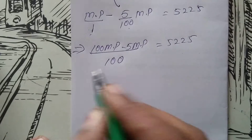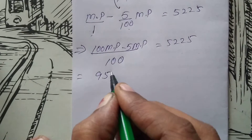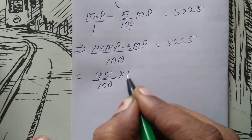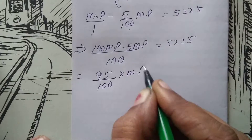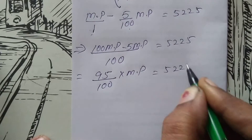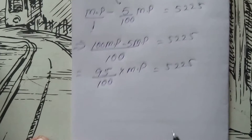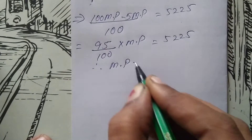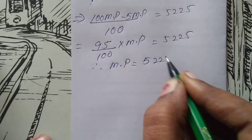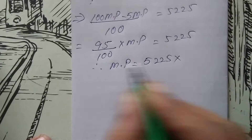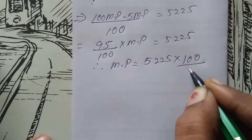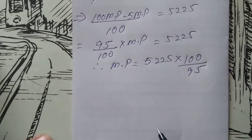100 marked price minus 5 is 95, so 95/100 of marked price equals 5,225. From this you get marked price equals 5,225, and 95/100 gets transposed to the right-hand side as 100/95.